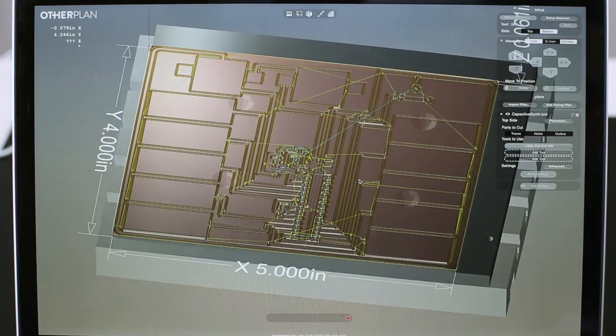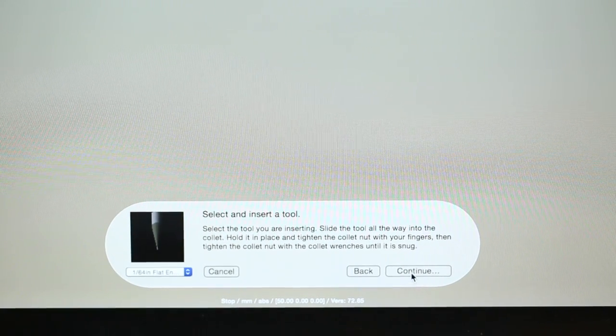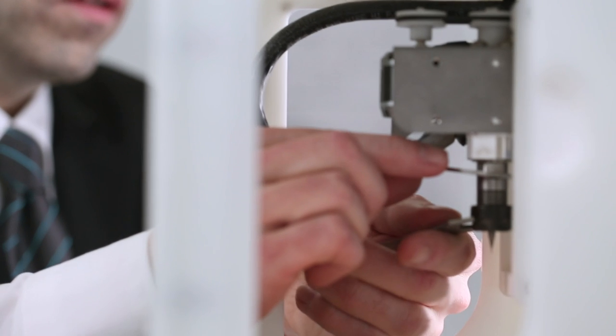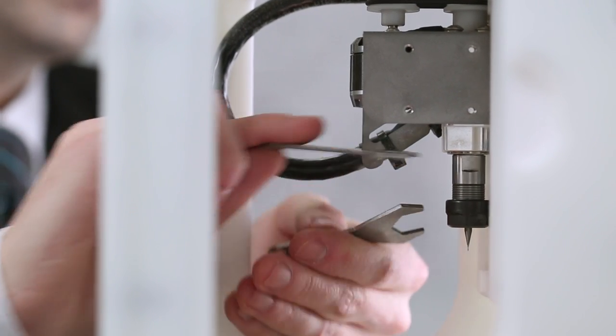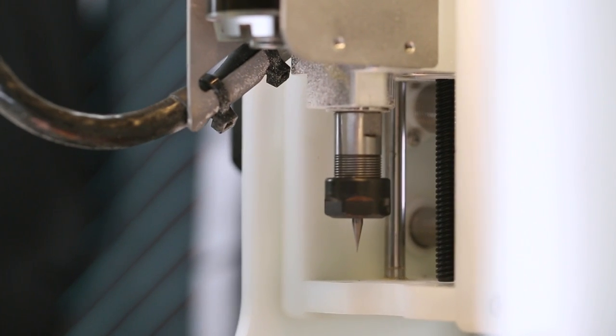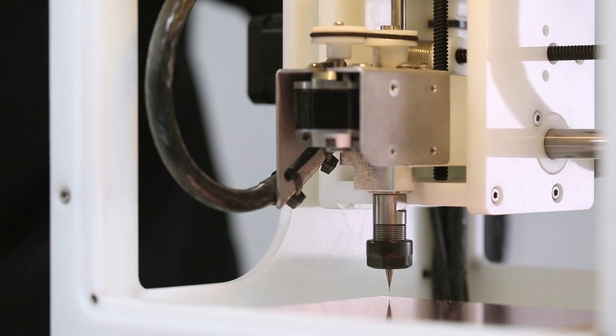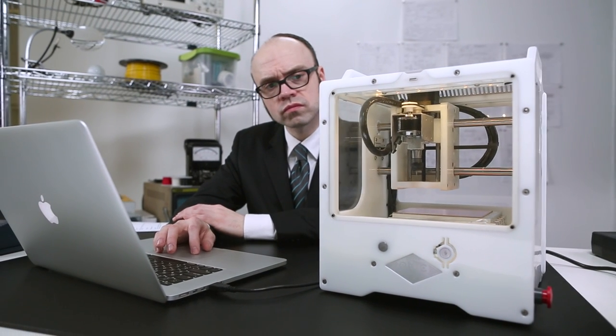The Other Mill software is pretty straightforward. Open up the board file for our project and specify the end mill size we'll be using. This design can be cut using 1/32nd and 1/64 inch end mills. We'll start with the smaller of the two, which will only be used for the holes and a few tight corners. After the mill goes through a quick calibration process, we can begin cutting copper. It's really cool!